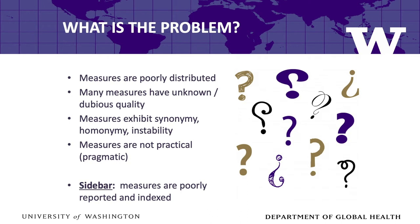In reviewing these hundreds of measures, we observed the following instrumentation issues. First, measures are poorly distributed across the constructs of interest in implementation science—for some constructs we have dozens of measures, and for others only a few or none at all. Second, many measures have unknown or dubious psychometric quality. Few measures in our field have undergone a systematic development and testing process, so their psychometric properties remain largely unknown and unexplored. There is limited information about reliability or validity, and the information we do have often suggests low or modest levels. In part, this problem arises because many measures are used once and never again. The proliferation of single-use measures contributes to the problem of limited information about reliability and validity.